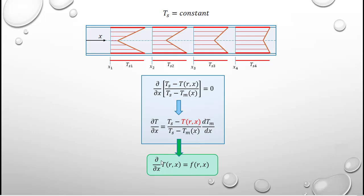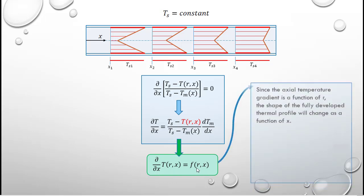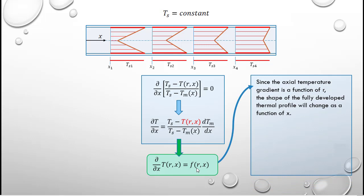Just summarized here, dT/dx, where T is a function of R and X, is now a function of R and X. This is in direct contrast to the situation for heat transfer with a uniform heat flux, where the local temperature was only a function of X. What this means is that since the axial temperature gradient is a function of R, the shape of the fully developed profile will change as a function of X.